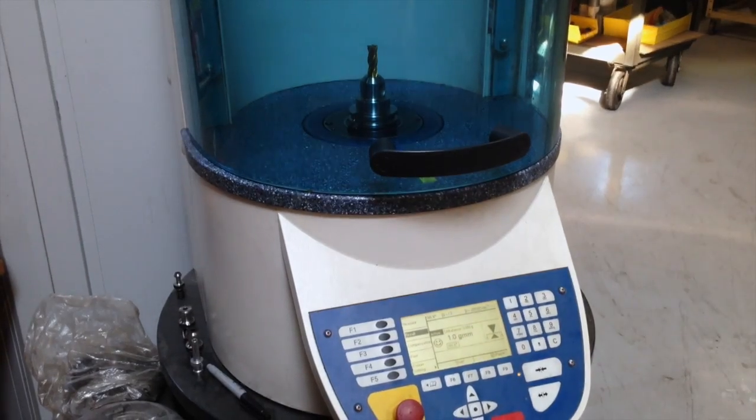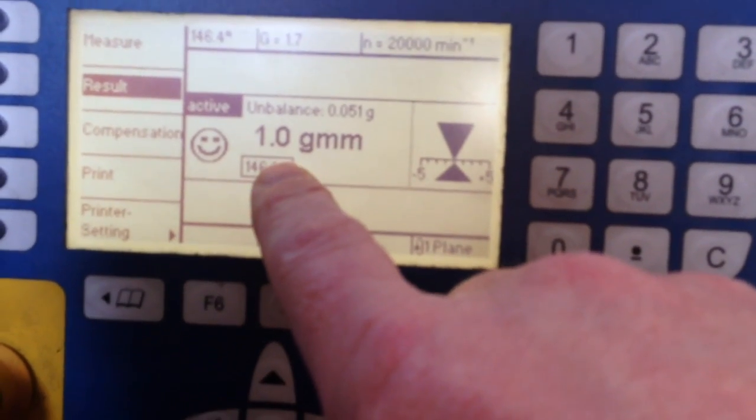And as you can see from the readings, it was one gram millimeter of unbalance, G 1.7 at 20,000.